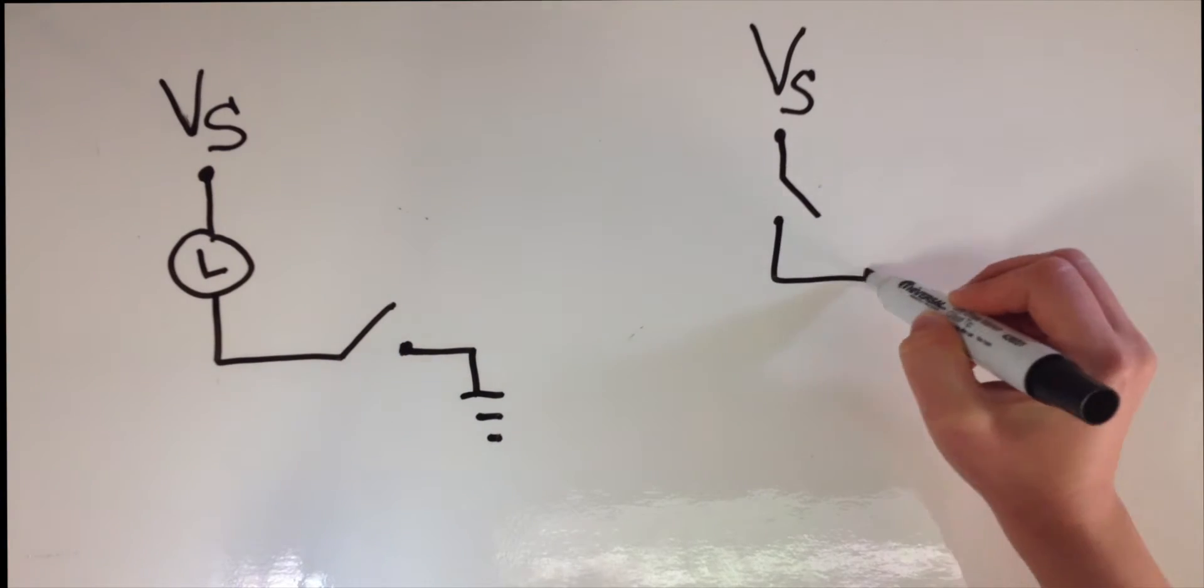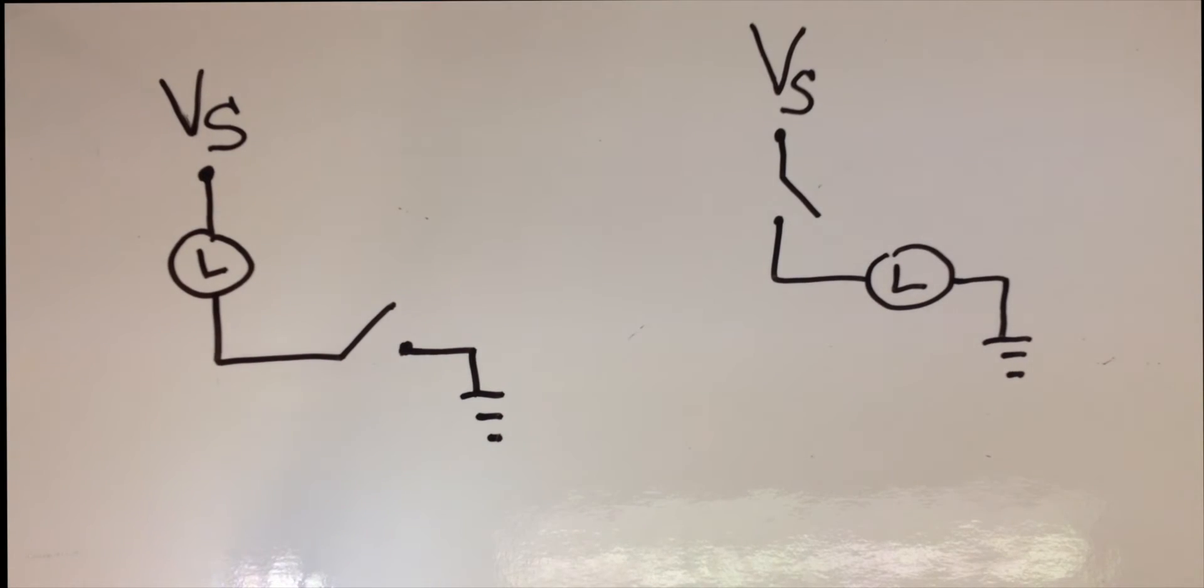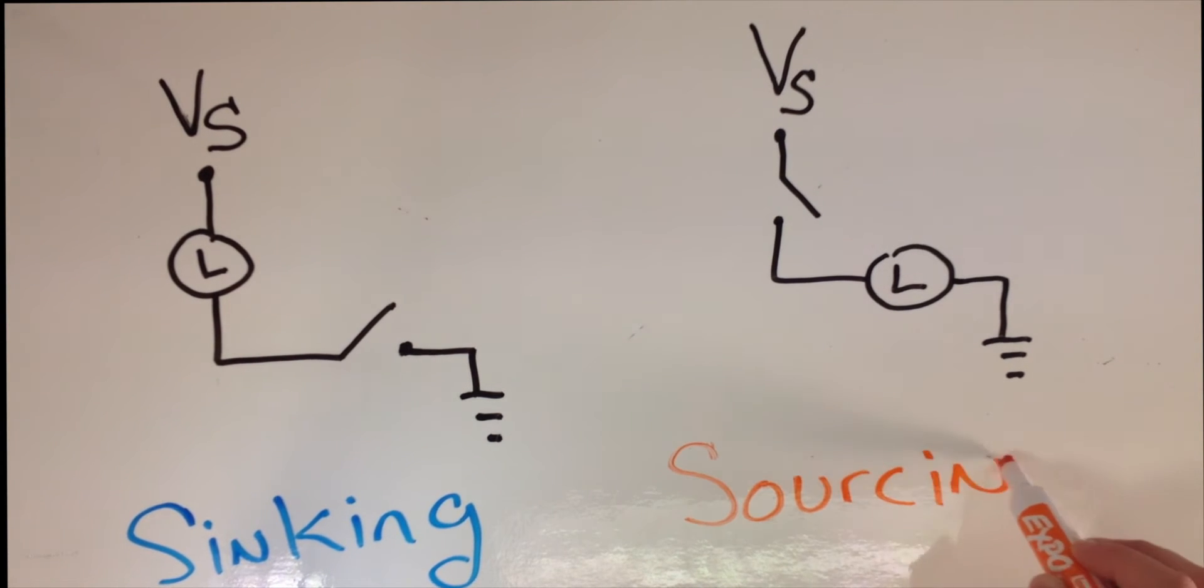Here is a simplified wiring diagram of the sinking and sourcing options of the opto-isolated outputs. In sinking or low side configuration, the switch is placed between the load and ground. In sourcing or high side configuration, the switch is placed between the voltage supply and the load.